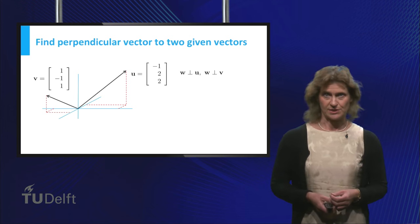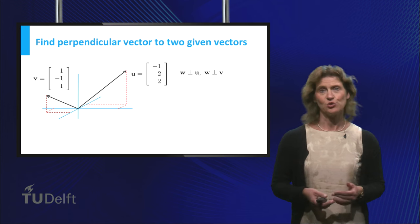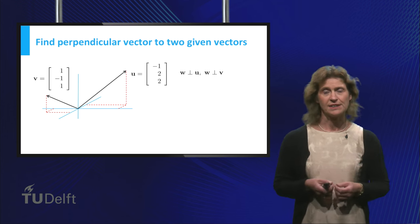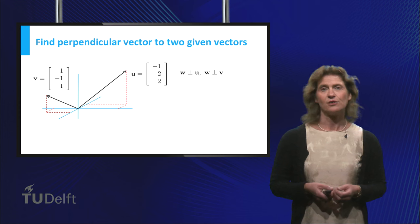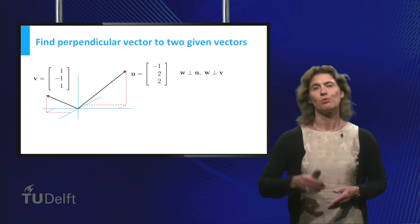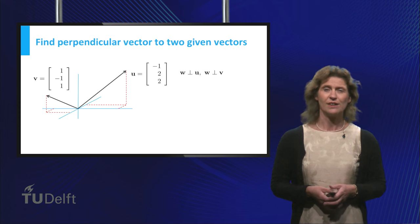Let's think about the following question. Given two vectors u and v in three-dimensional space, find another vector w that is perpendicular to both of them. How can you find it?